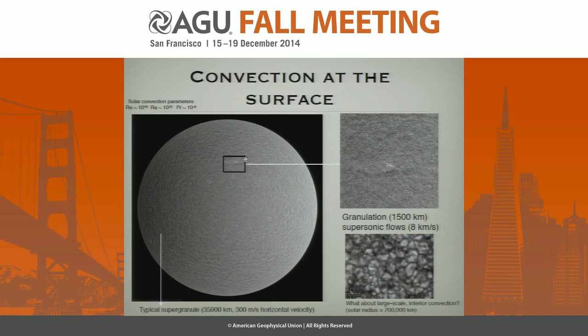If you were to take any region of the sun and zoom in, you see all these dots and structures. If you zoom in even more, you see these little cells. This is the fundamental unit of thermal transport in the sun — this is granulation, about 1,500 kilometers in size. Granules dot the surface of the sun and transport one solar luminosity outwards. What we're really interested in is what happens on larger scales and the nature of convection in the interior of the sun.